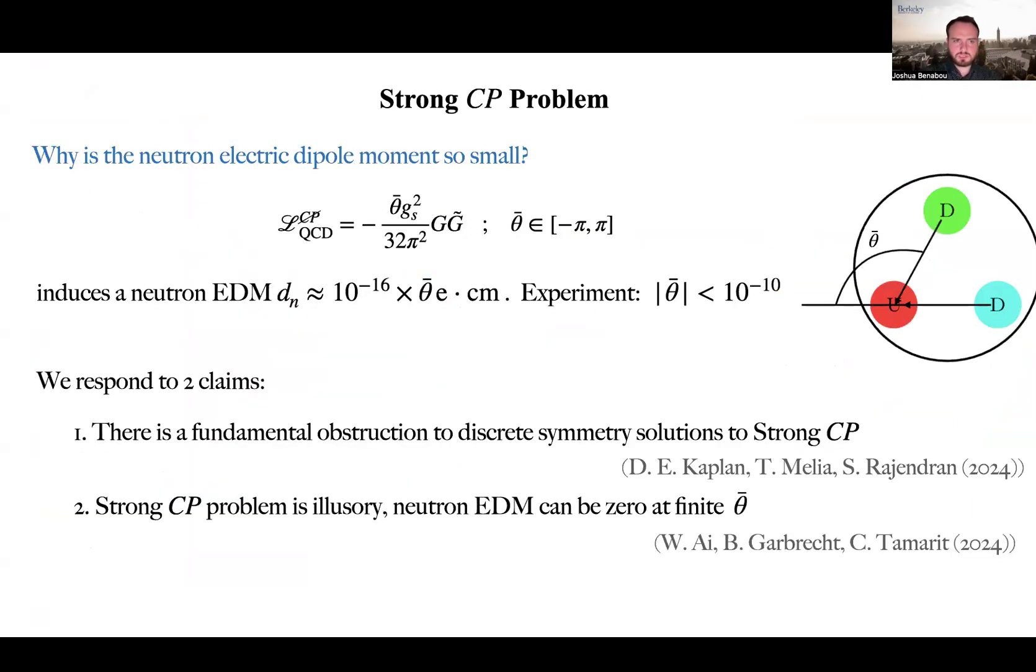In our paper, we study the strong CP problem, which is the question of why the electric dipole moment of the neutron is so small. The QCD Lagrangian contains a term, theta bar gg dual, where theta bar can be thought of as an angle between minus pi and pi, g is the gluon field strength, and g dual its Hodge dual.